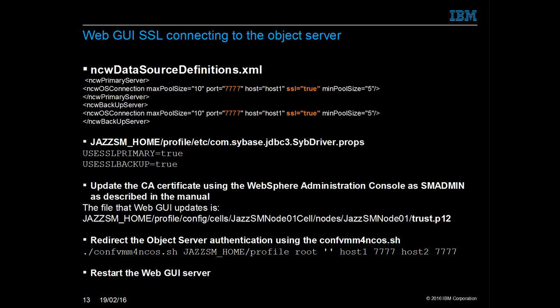To allow WebGUI to connect to the aggregation object servers, the NCW data source definitions.xml file needs to specify SSL and the object server's SSL port. The object server certificates need to be added to the WebGUI server trust store using the WebSphere administration console. The Sybase JDBC drivers need to be enabled for SSL for the object server's authentication. Then the SSL port can be defined using the confvmm4ncos.sh tool. For the updates to take effect, the WebGUI server needs to be restarted.